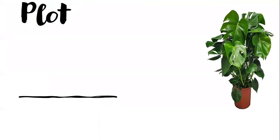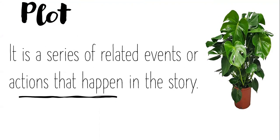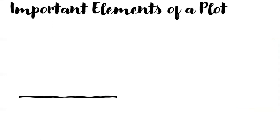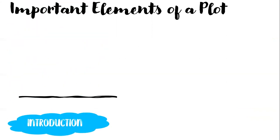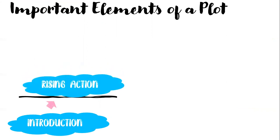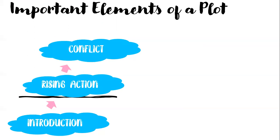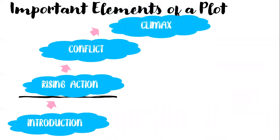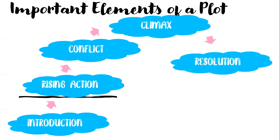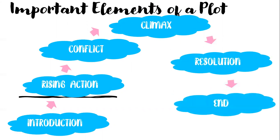Now let's have another element of a story which is the plot. A plot is a series of related events or actions that happen in the story. It is also divided into important elements: first, we have the introduction, then rising action, followed by the conflict, on top is the climax, and going down is the resolution and the ending of the story.